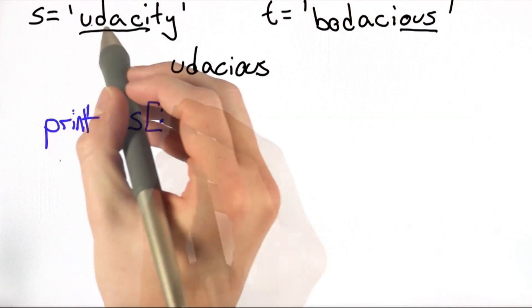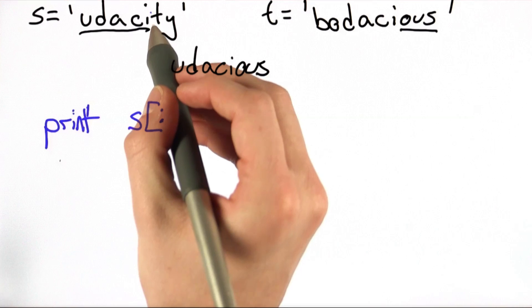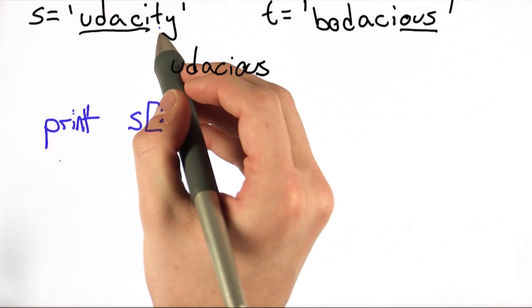And we want to go 0, 1, 2, 3, 4. Since we want to include the fourth character, we're going to end it at 5.